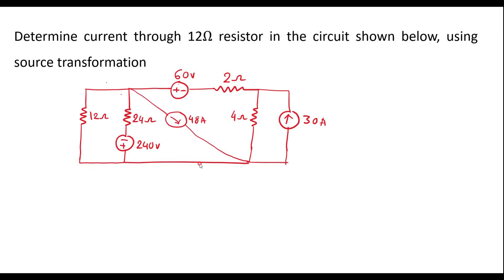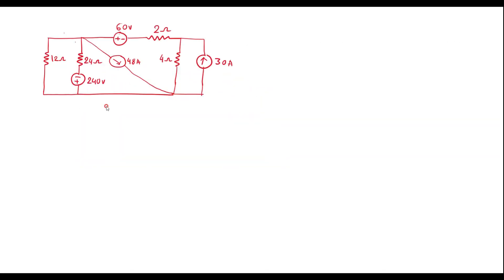In this video, let me consider one numerical on source transformation. Determine current through the 12 ohm resistor in the circuit shown below using source transformation. This is the given circuit and we are supposed to find the current through the 12 ohm resistor — let's call it I.